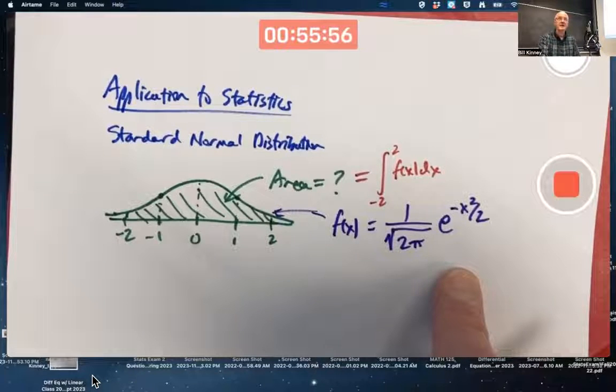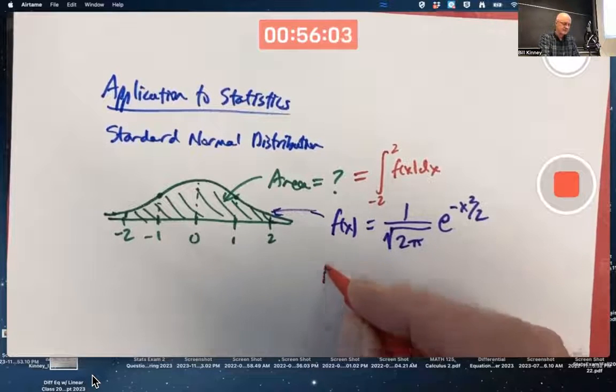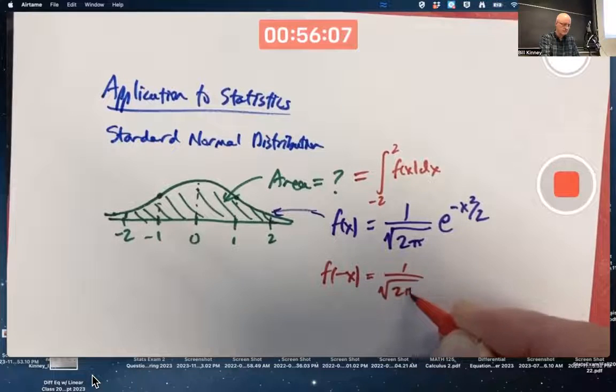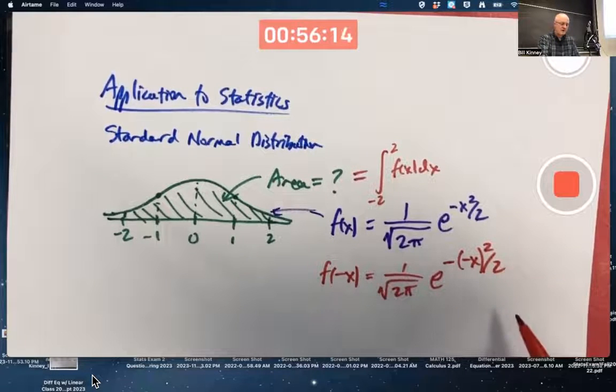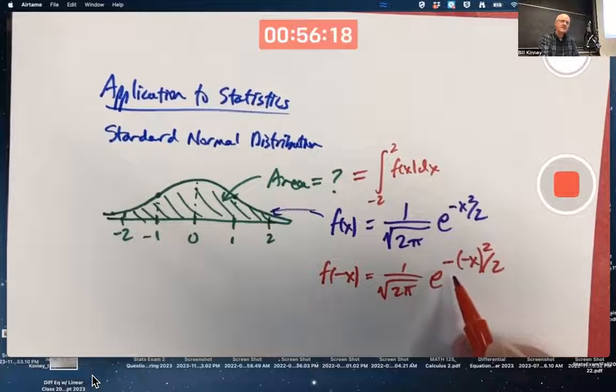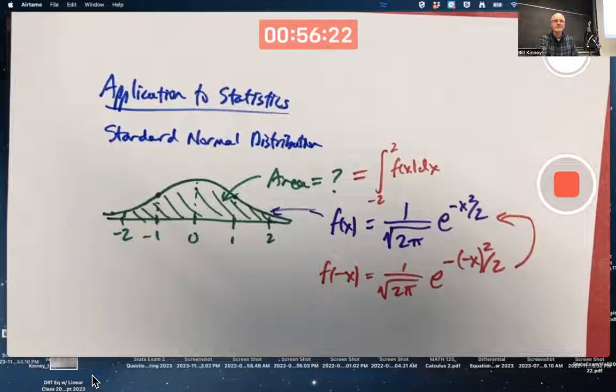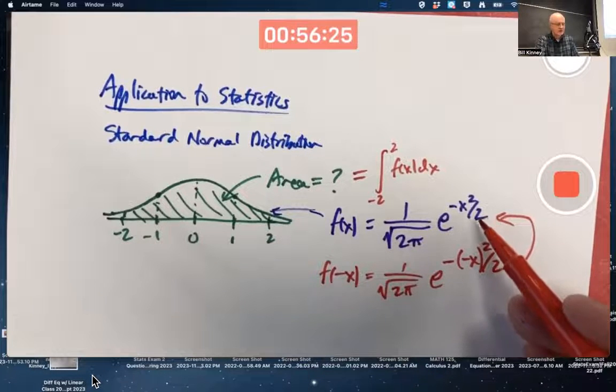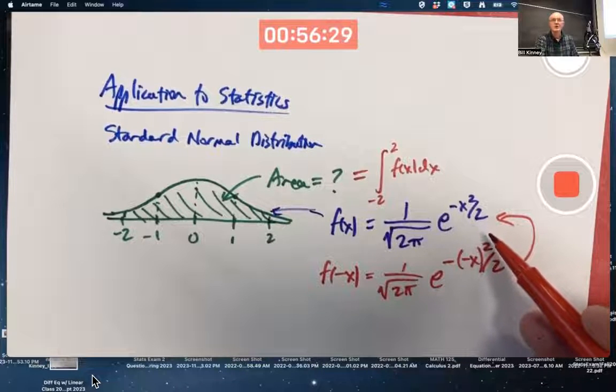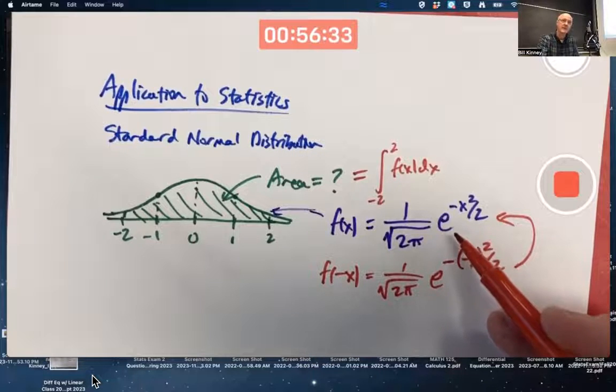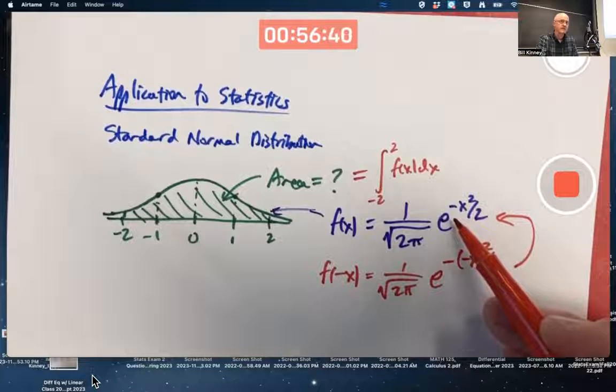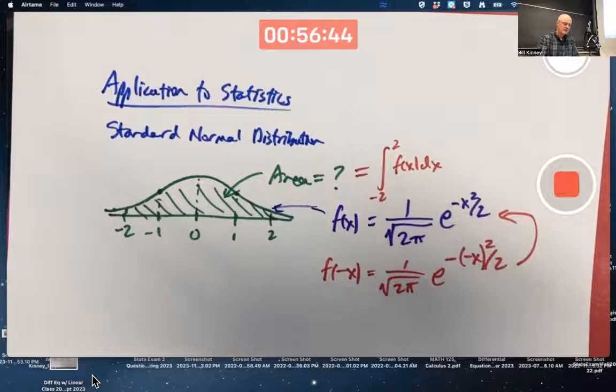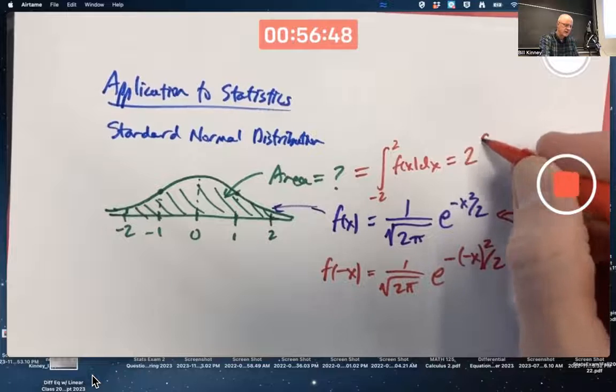First application of a property. This function is even. If you replace x with negative x, you get this. Negative x quantity squared is the same as x squared. That negative sign doesn't go away. It stays there. This is the same as that. Order of operations is important in here. When you see this expression, negative x squared over 2, you should first figure out x squared over 2 and then put a negative sign in front of it. We are not squaring negative x here. We are doing x squared and then putting a negative sign in front of it. So, since it's even, we can do 2 times the integral from 0 to 2.